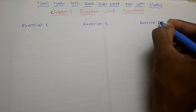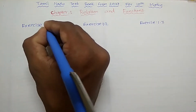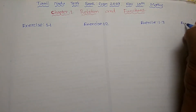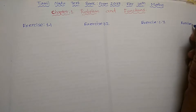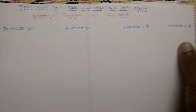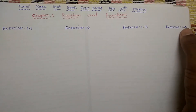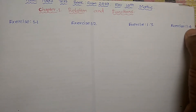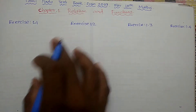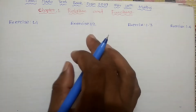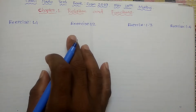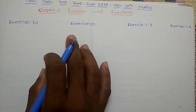1.3, 1.2, 1.1 — that means the 4th exercise is 1.4. And the 5th exercise is 1.5.